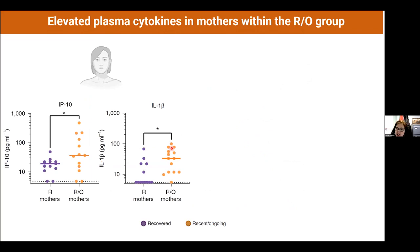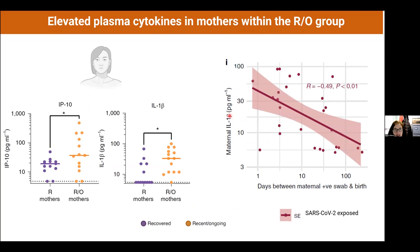Certain cytokines are known to be associated with COVID infection in adults. IP-10 and IL-1β were significantly elevated in plasma from recent or ongoing infection mothers compared to recovered mothers. Maternal IL-1β levels correlated with proximity to birth — much higher when the positive SARS-CoV-2 swab was taken close to delivery, and much lower in mothers who had COVID 100 or more days before birth.